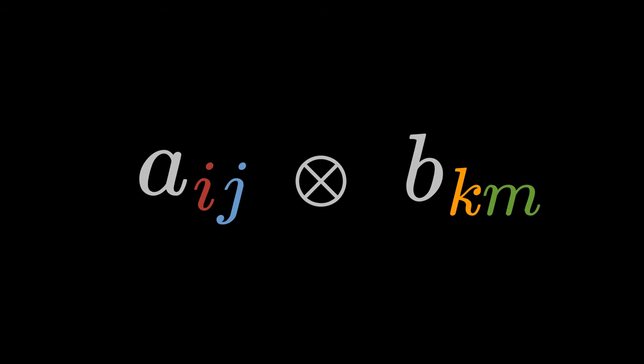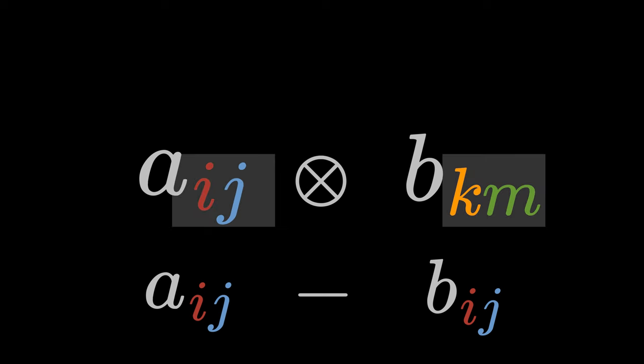The next operation is probably new to you, namely the tensor product. Sometimes it is also called the outer product. Here, the components with equal indices are not combined as in addition and subtraction of tensors. For the tensor product, we have to label the indices of the tensors differently.